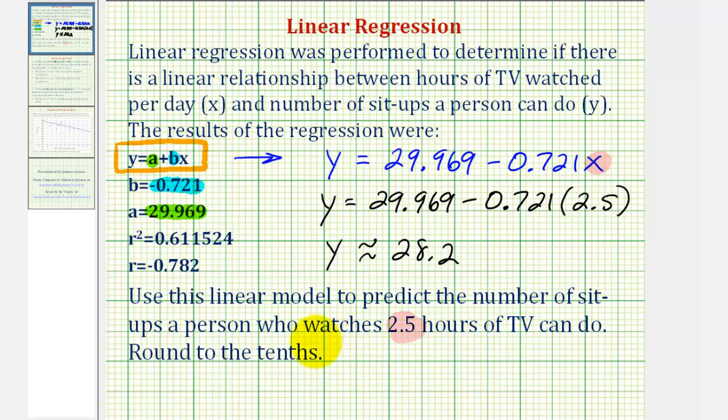So our prediction is 28.2 sit-ups if a person watches 2.5 hours of TV per night.